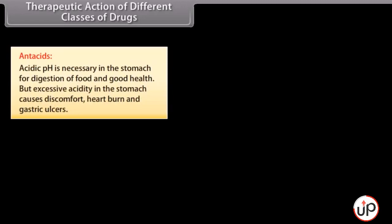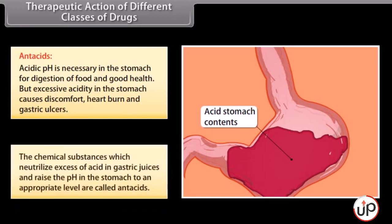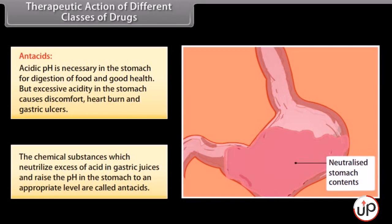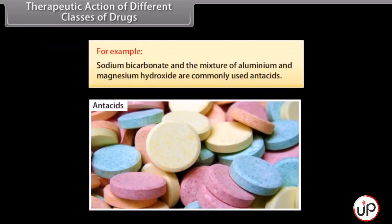Therapeutic action of different classes of drugs. Antacids: acidic pH is necessary in the stomach for digestion of food, but excessive acidity causes discomfort, heartburn and gastric ulcers. The chemical substances which neutralize excess acid in gastric juices and raise the pH in the stomach to an appropriate level are called antacids. For example, sodium bicarbonate and the mixture of aluminium and magnesium hydroxide are commonly used antacids.